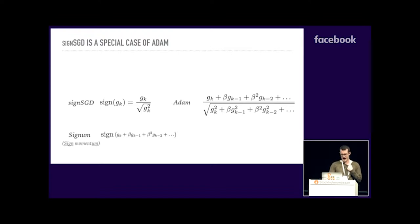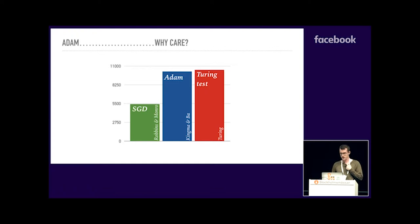Why should you care about Adam? If you look at this chart, this is the number of Google Scholar citations of these algorithms. Adam, in the four years of its existence, has been cited almost twice as the Robbins-Monro paper, which has been around for 50 years. It's an incredibly important optimizer in the community. It's very different to SGD, sort of less well understood, yet it works pretty well. Clearly 11,000 people have cited using it. If we want to understand neural networks, we should understand why this algorithm works so well.